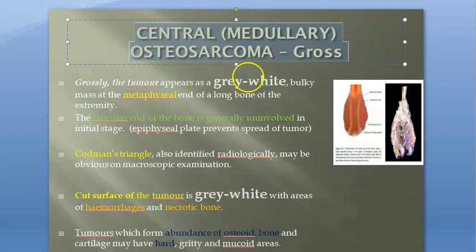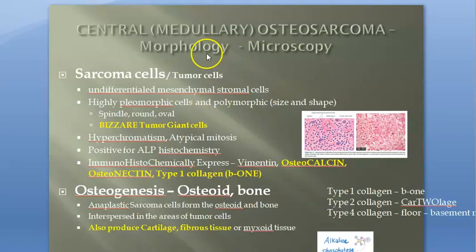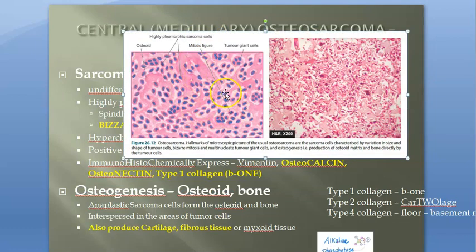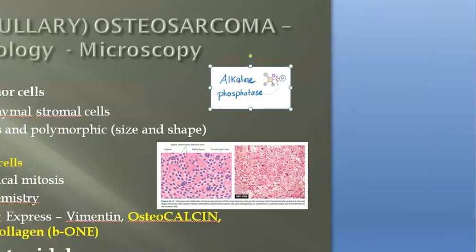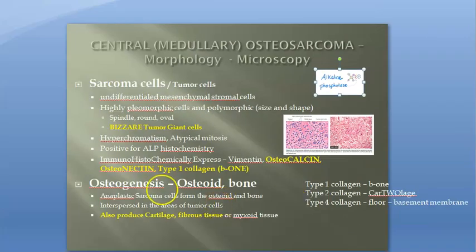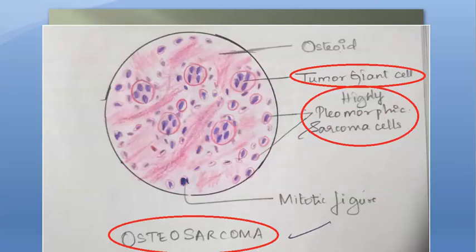On gross pathology, you can see the periosteum being lifted, the metaphysis being affected, and necrosis and hemorrhage. On microscopy, there are two main findings: osteoid or new bone formation, and between that, sarcoma cells which are pleomorphic with giant cells. These cells produce the osteoid bone. On histochemistry, alkaline phosphatase is raised. On immunohistochemistry, vimentin, osteocalcin, and osteonectin are found, along with type 1 collagen.